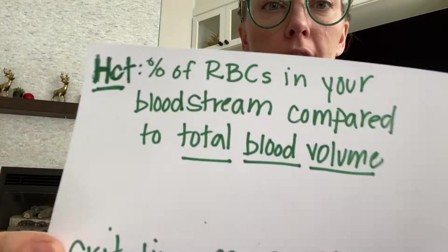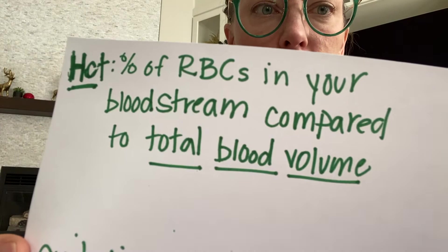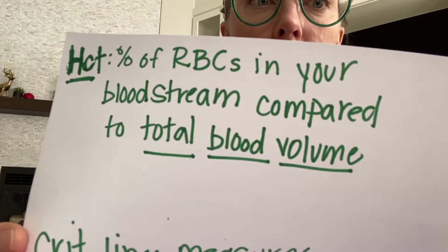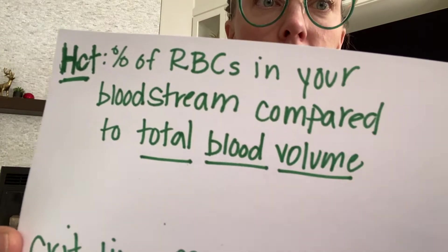Hey, this is going to be my attempt at explaining crit line monitors in a simple way. The first thing you need to understand is that the crit line is monitoring the patient's hematocrit, which is the percent of red blood cells in your bloodstream compared to total blood volume. If you have a hematocrit of 30 to start, the machine's going to look at that starting hematocrit and constantly measure it.